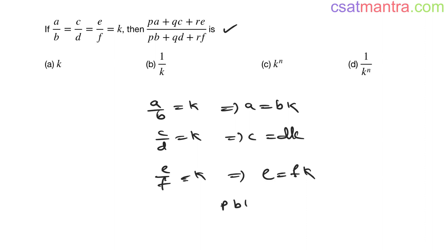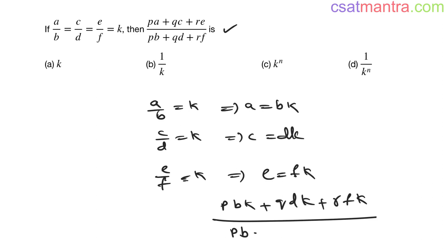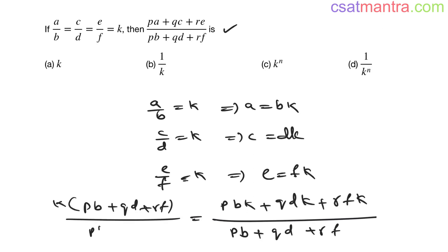So p·a = p·(bk), q·c = q·(dk), r·e = r·(fk). In the denominator you have pb + qd + rf. k is common, so take it outside: k(pb + qd + rf) divided by (pb + qd + rf). This value and this value get cancelled, and the answer is k.